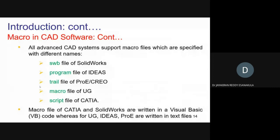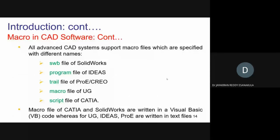This type of feature is available in almost every CAD software. In SolidWorks the macro extension is .swb. In Ideas it is .program, in T-FLEX the extension is .trial, in NX (formerly UG) the macro is named accordingly, and in CATIA it's called a script. All these are the same — all contain the macro written in a logical manner for generating any CAD model.